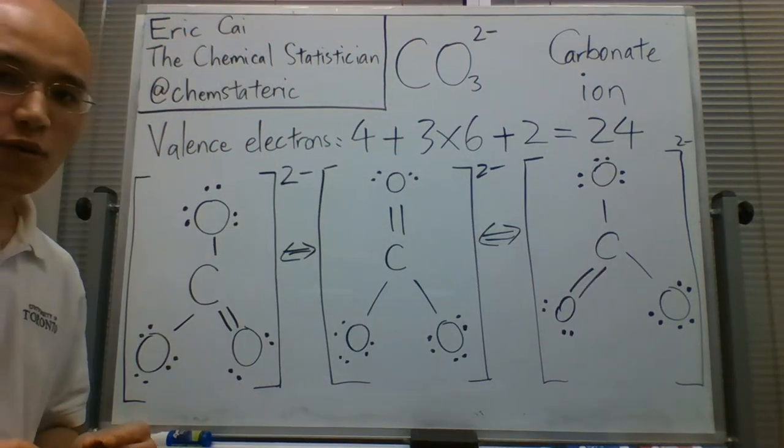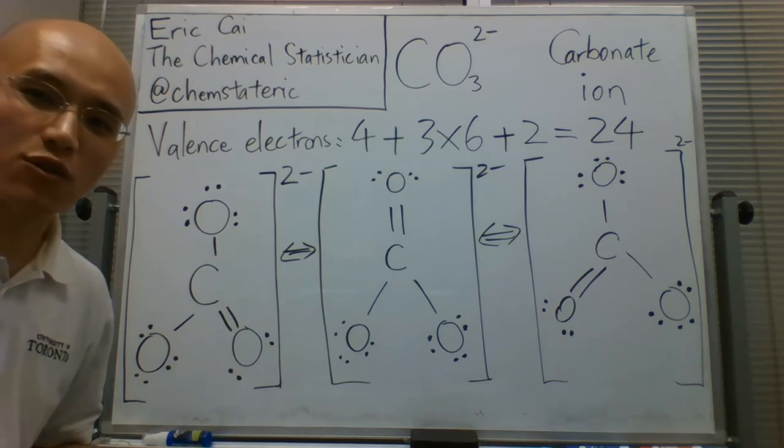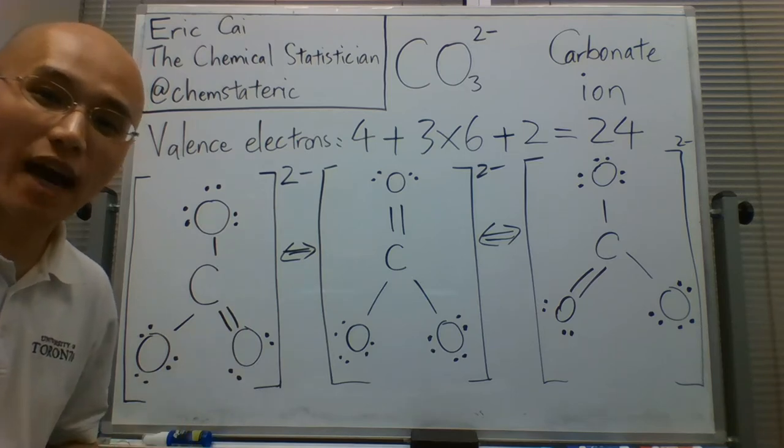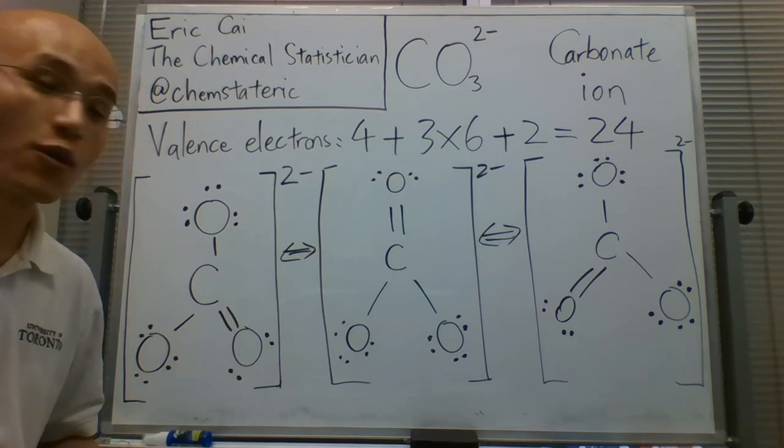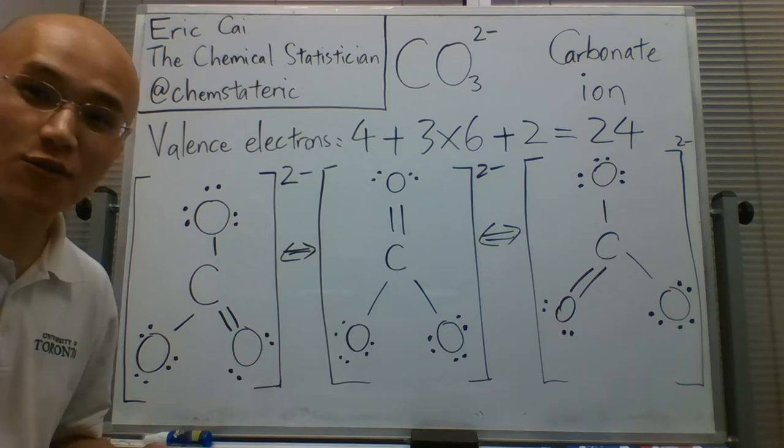So, those are the three resonance structures for the carbonate ion. And those, of course, are the three Lewis dot structures for the carbonate ion.